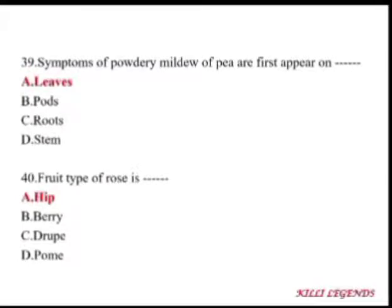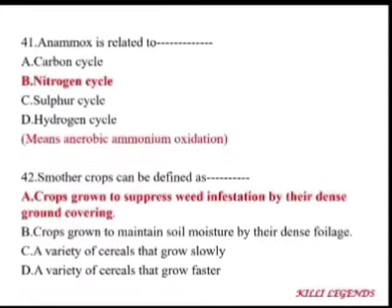Symptoms of powdery mildew of peas first appear on leaves — powdery mildew is a disease of the leaf. The fruit of rose is called a hip. Anammox is related to the nitrogen cycle and stands for anaerobic ammonium oxidation.